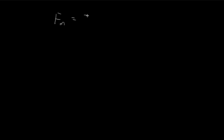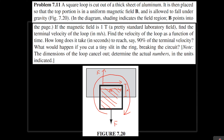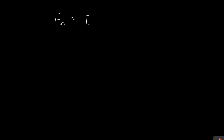Now that we've found the current, we can find the magnetic force. The magnetic force equals current times length times magnetic field. The length is a, and the current is aBv/R, so the magnetic force works out to a²B²v/R. This is the magnetic force.